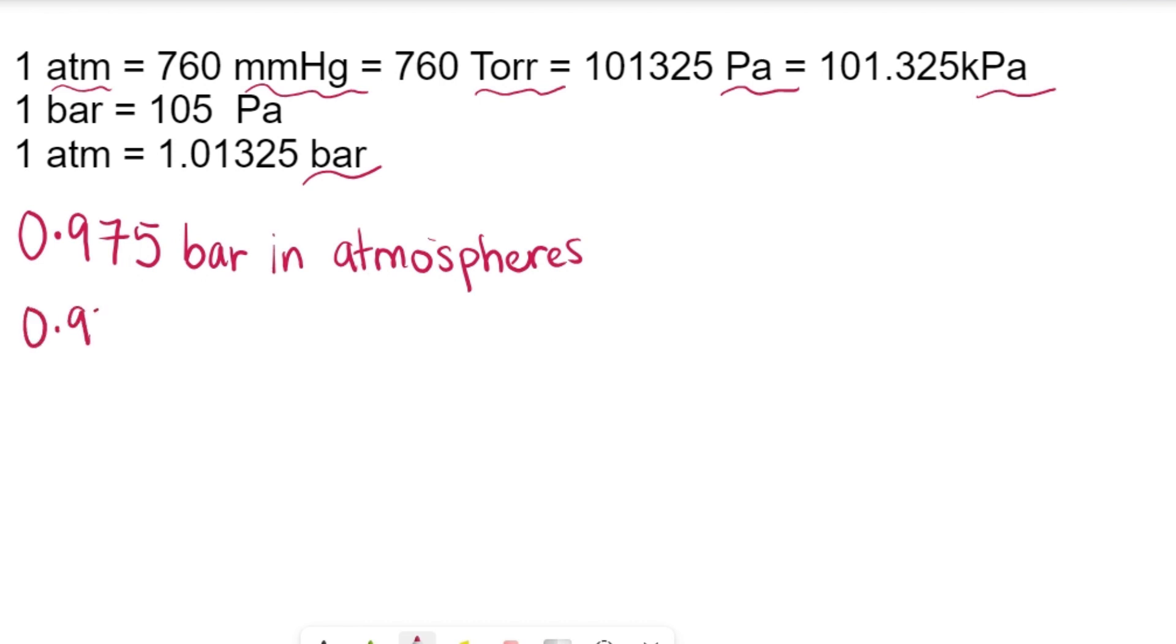The first thing you have to do is write out 0.975 bar. We're going to be using the common theme that we use in general chemistry to solve this physical chemistry problem, which is simply dimensional analysis or unit conversion.